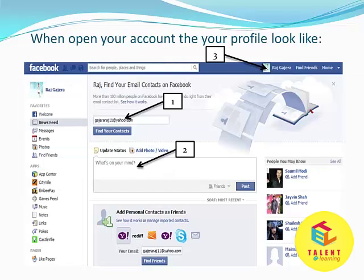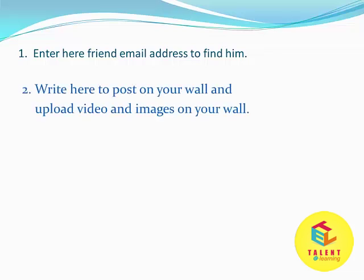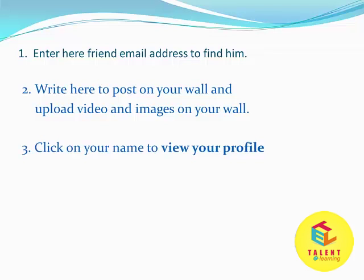After logging in, you'll find the home page of your profile. There are three important points to cover: first, enter the email addresses of your friends to find them; second, write your post to publish on your wall. You can upload images, upload videos, write text, and then click on view profile to view your profile.